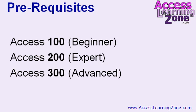As of right now, I'm in the process of renaming my courses as I re-record them for Access 2010. The 100 series is going to be called Beginner, the 200 series Expert, and the 300 series Advanced. So if you go to the website and can't find 101 and 201, that's why — the new courses will be called Beginner, Expert, and Advanced.